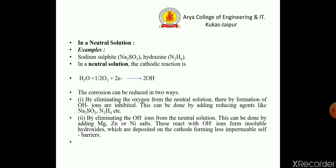This can be done by the addition of reducing agents like sodium sulfite and hydrazine. The second method is by eliminating the hydroxide ions from the neutral solution — this can be done by the addition of magnesium, zinc, or nickel salts. These react with hydroxide ions to form insoluble hydroxides, which are deposited on the cathode, forming less permeable self-barriers.